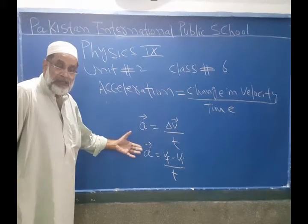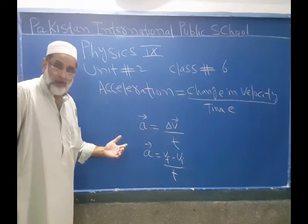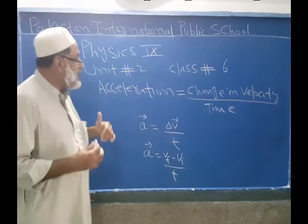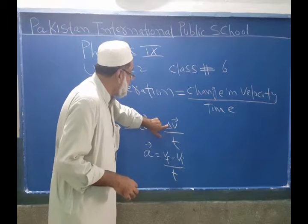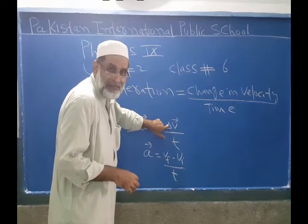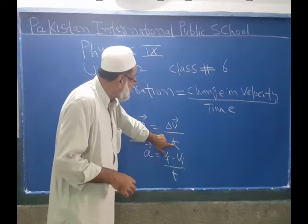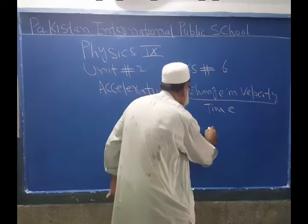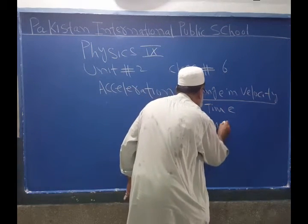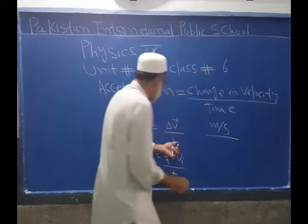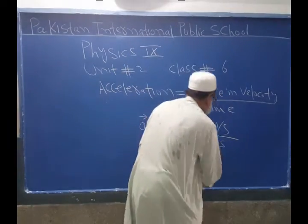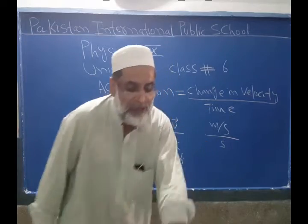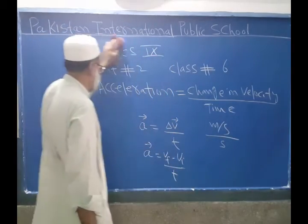Acceleration is a vector quantity. Its unit: the unit of velocity is meter per second, and the unit of time is second. So the unit of acceleration is meter per second divided by second, which gives meter per second squared.